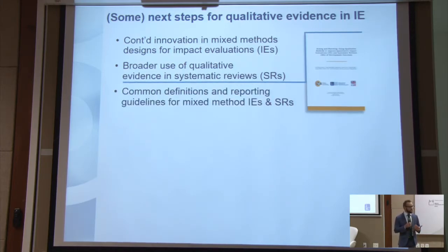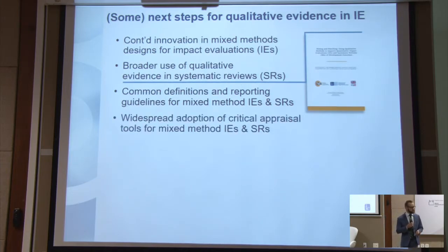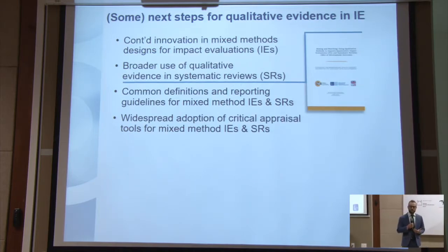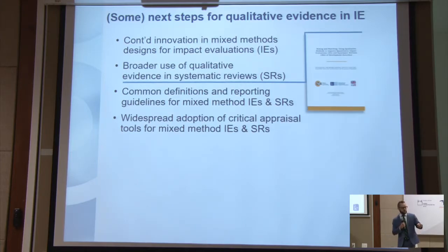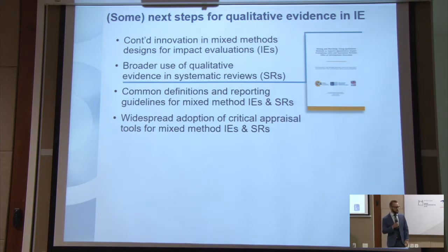Additionally, having common definitions and reporting guidelines for mixed-methods impact evaluations and systematic reviews, and ideally widespread adoption of the same kinds of critical appraisal tools and approaches so that we can all have some sense of what counts as a high-quality mixed-methods impact evaluation and systematic review. Those three things are also discussed in the 'mixing and matching' paper mentioned earlier, which is available on the 3IE website.